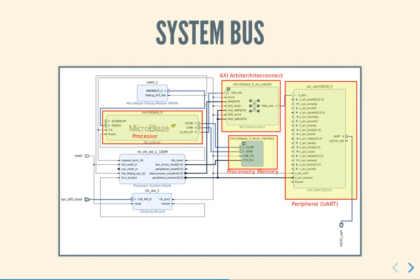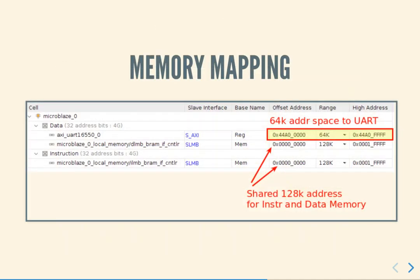In future designs we will actually go through the process of building systems around these kinds of buses. For the most part you can just use them without having to understand the details of how the bus interface signals work, but having some basic understanding will help you debug much more easily. How does a processor actually communicate with the peripheral? We use something called memory mapping, where a portion of the address space of the processor is used to map parts of the peripherals, so that when the processor reads or writes from those addresses it is indirectly talking to those peripherals.